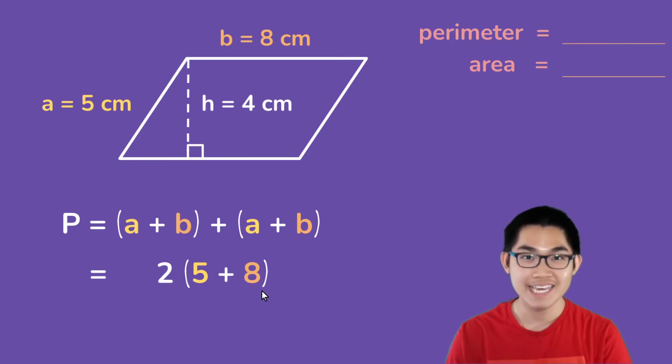5 plus 8 is equal to 13, and 13 times 2 is equal to 26 centimeters, and that is your perimeter.